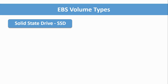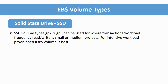SSD is the best for instances when hosting applications or when expecting real-time performance at the volume level. The SSD volume type has two types — GP2 and GP3 — which can be used for transactional workloads with frequent read/write operations, suitable for small to medium projects where some level of performance is expected.